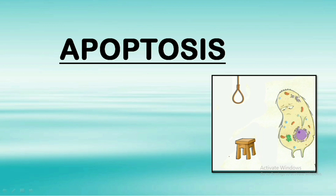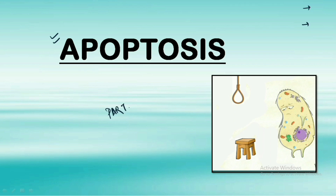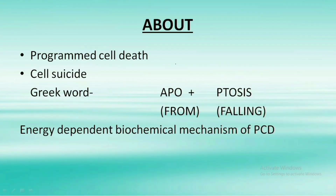Hello everyone, welcome to Botany Insider. In this lecture we'll be dealing with one of the most important topics from the CSIR UGC NET, and that is apoptosis. We'll be covering what apoptosis is and the various steps involved in it. In the second part of this series we'll understand the various mechanisms by which apoptosis occurs. This is part one of apoptosis.